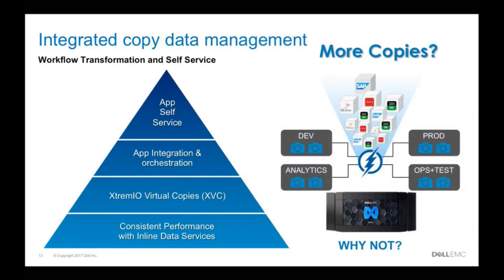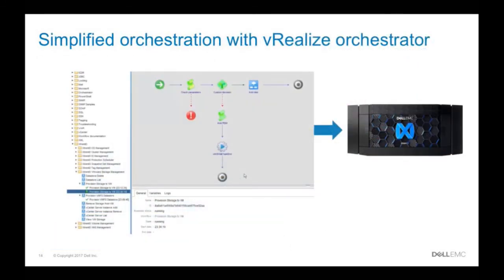We can take this one step further with what we call integrated copy data management. On top of scale-out consistent performance and XtremIO virtual copies, we provide application automation and orchestration. You can do all of this from vCenter itself. We also have REST APIs, and you can orchestrate all storage services from vRealize Orchestrator using our adapter — deploying storage services, creating volumes, setting up replication, and doing snapshots all from your orchestration layer without ever going down to the storage UI.